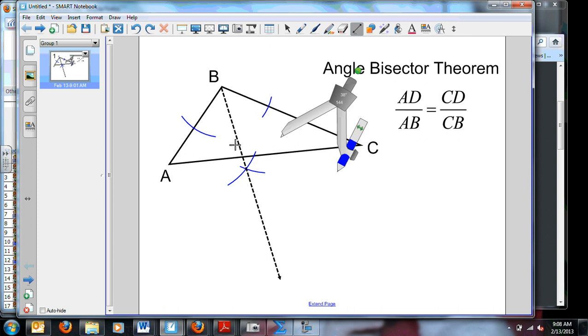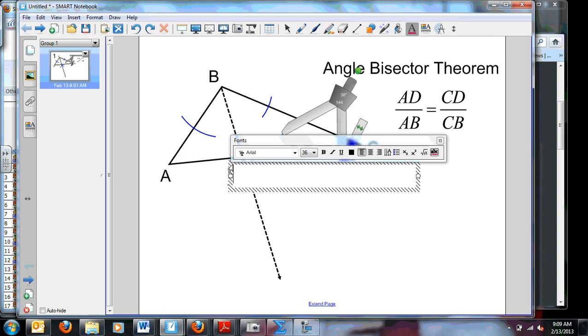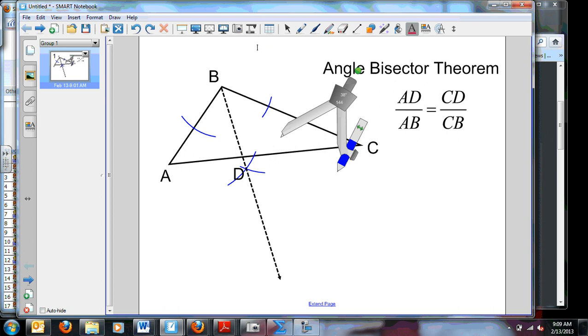Now, to prove the angle bisector theorem, we need to put that this intersection we're going to call D. And I'm going to get rid of all this other unneeded markings here.